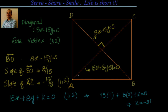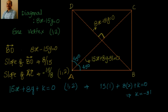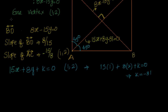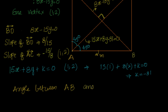This is a pretty simple problem because we know the diagonals of a square make an angle of 45 degrees with the sides. Now we know the equation of AC, and we have to find out the equation of AB. The angle between AB and AC is 45 degrees.